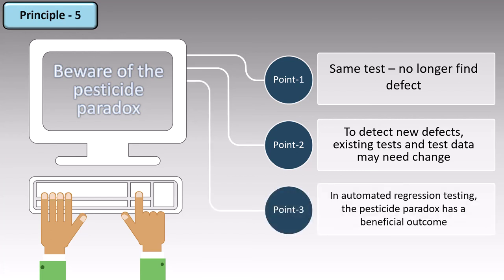The third point is that when you're performing automated regression testing, the pesticide paradox has a beneficial outcome. When you run automated testing, you are running scripts. So if you run the same script, it is highly unlikely that you will find new defects. But if you update your script, add new values or new test cases to it, then there is a possibility of discovering new defects. This principle is very beneficial when you're performing automated testing.